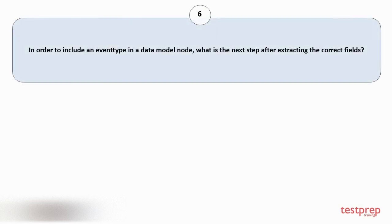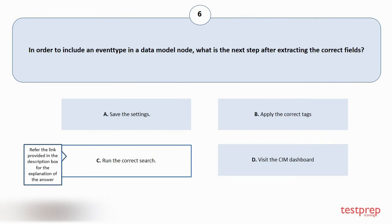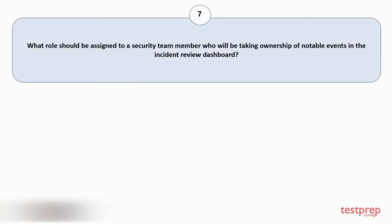Question number six: in order to include an event type in a data model node, what is the next step after extracting the correct fields? Options are: A) save the settings, B) apply the correct tags, C) run the correct search, D) visit the CIM dashboard. The correct answer is option C.